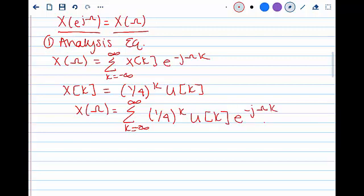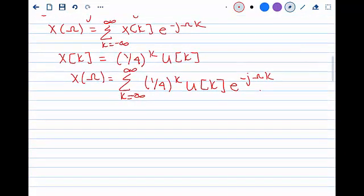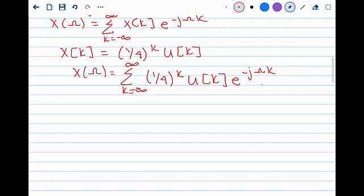Once we complete this, we have to realize that we need to get the summation in a form that we can relate to through an identity. Our first step is to notice that the unit step can be removed by changing the summation interval from n equals 0 to infinity instead of negative infinity to infinity.